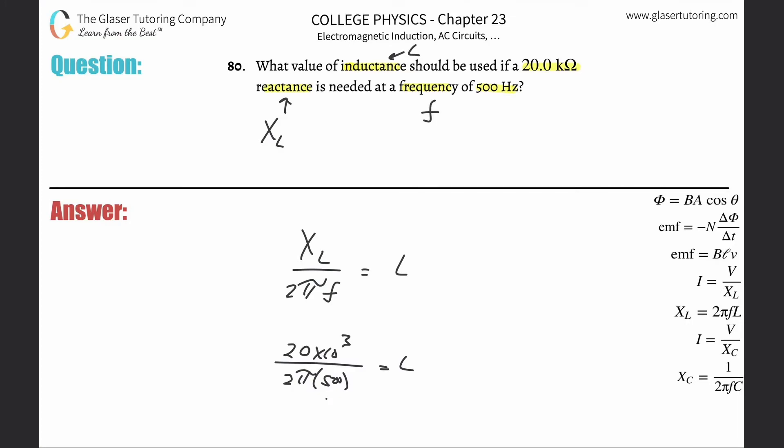And this works out to be a value of about 6.37, and that is in henries. That's the unit of inductance.